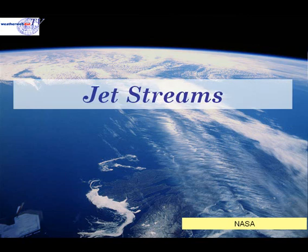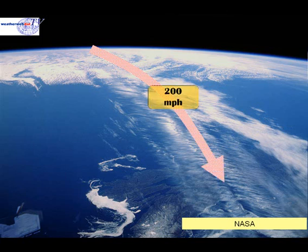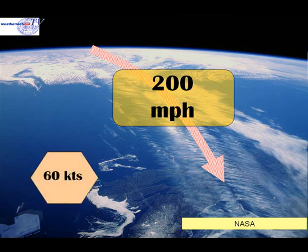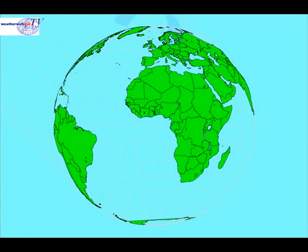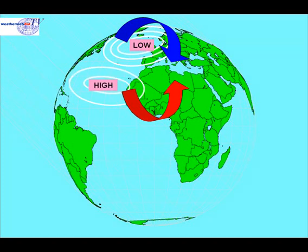This video is about jet streams. The jet stream is a fast-moving ribbon of winds at high altitudes in the atmosphere. Wind speeds can reach 200 miles per hour. To qualify as a jet stream, winds must exceed 60 knots. As it meanders around the globe, the jet stream aids the exchange of cold air from the poles and warm air from the equator, thus creating areas of weather and helping the development of low and high pressure areas.